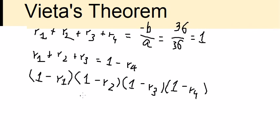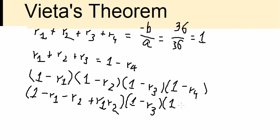Next, we need to multiply together. You got 1 - r₁ - r₂ and you got positive r₁r₂. Next, we multiply with this one.